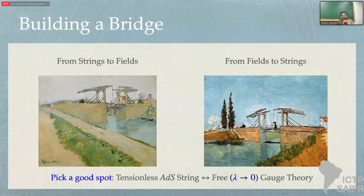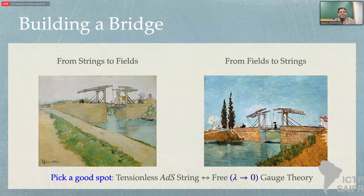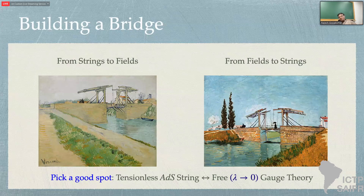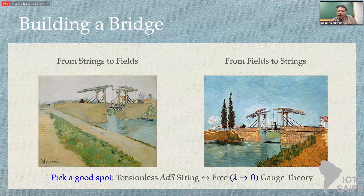I see deriving gauge-string duality as like building a bridge between two river banks, each of which has its own landscape and is well studied in its own terms. When you build a bridge, one of the first things you have to pick is a good spot, and as you heard in Matthias's talk, I think the free gauge theory or the dual tensionless small-radius AdS string theory is the right tractable place to build this bridge. When you build a bridge you start from both sides and hopefully you meet in the middle, so I'll make some remarks about going from strings to fields and then from fields to strings.